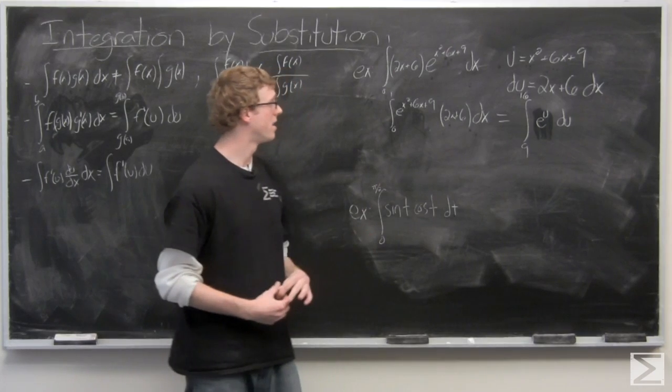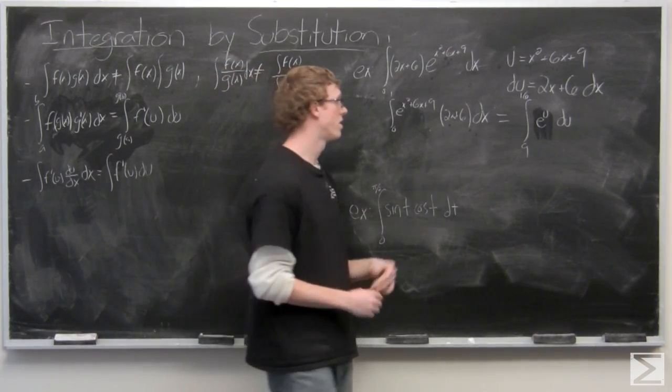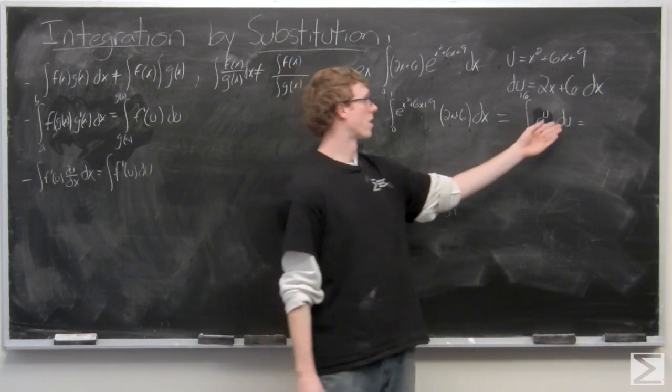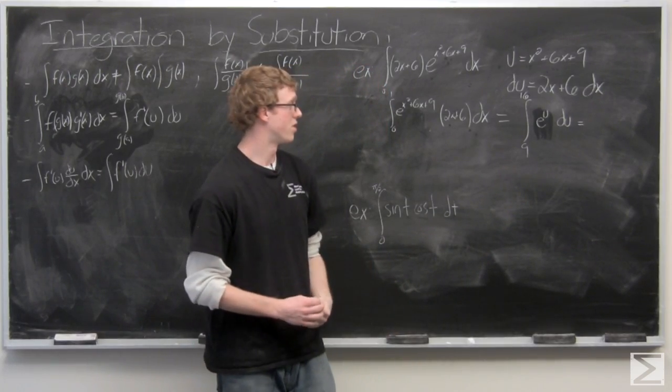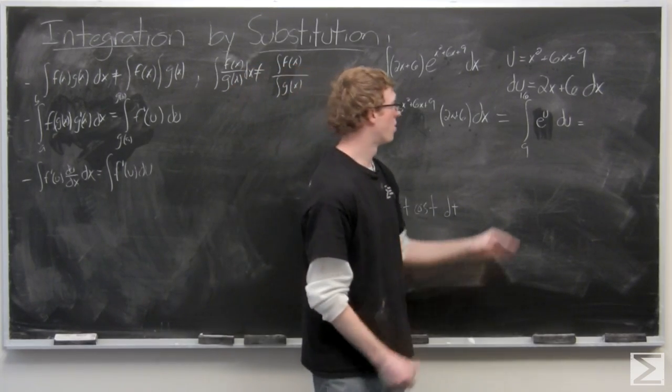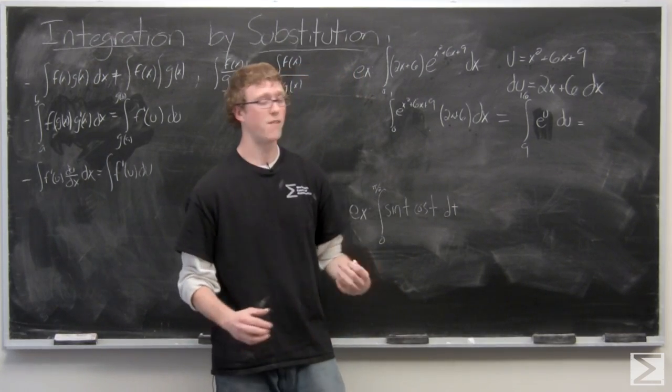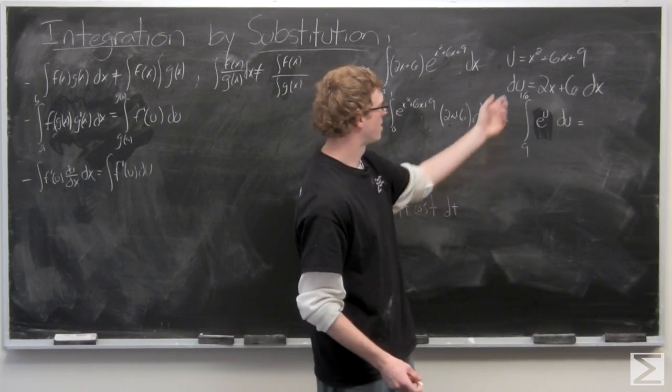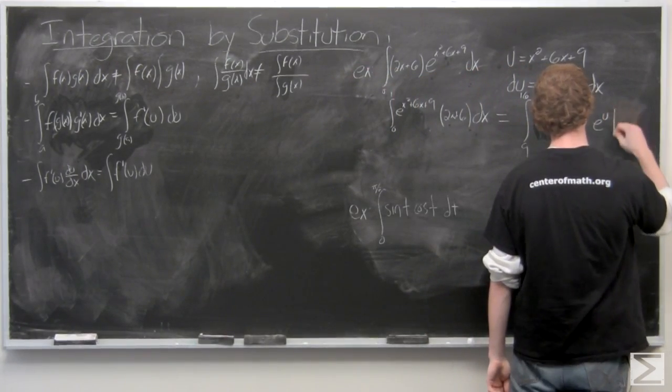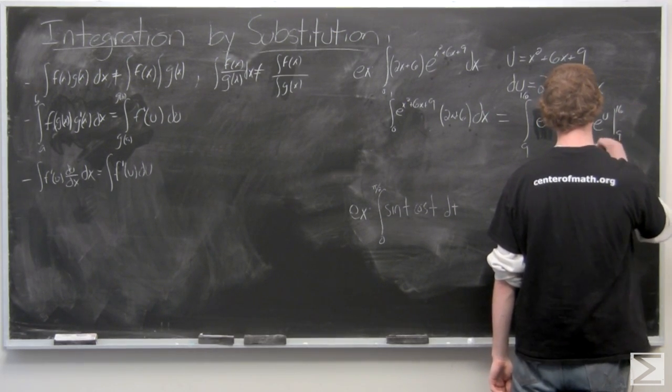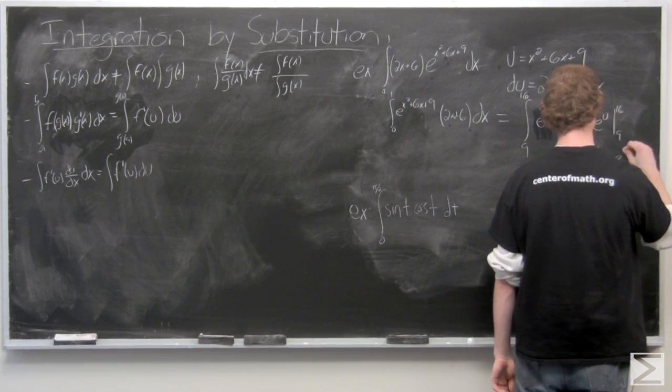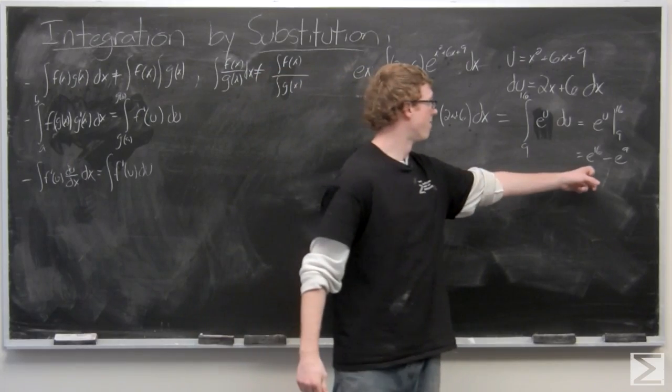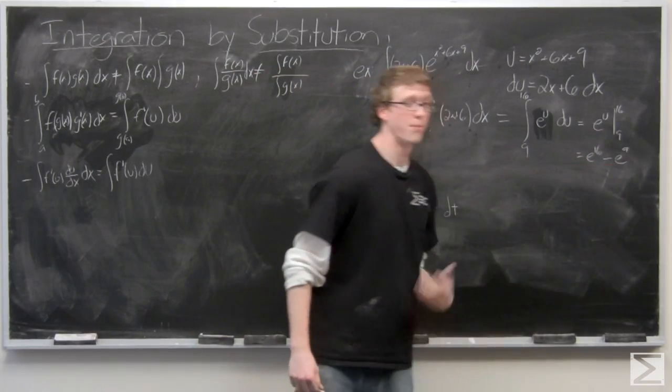And now, all we need to do is integrate e to the u du. Now, e to the u, if we think about the exponential function, the derivative of e to the u is just e to the u. If there was a constant term up here, we might need to use the chain rule and multiply our integral by a certain constant, but there isn't. So, it's just e to the u from 9 to 16. And as we know from our integration, our definite integration video, this is simply e to the 16th minus e to the 9.